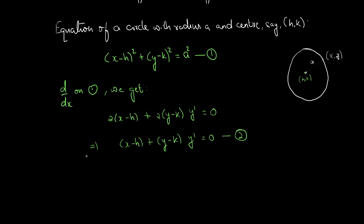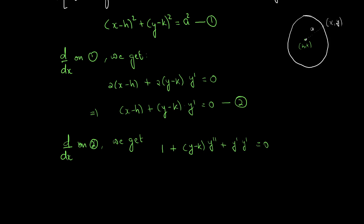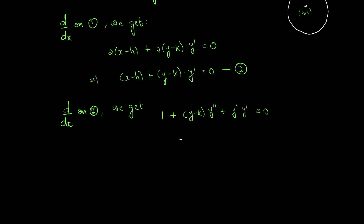Now differentiating equation 2 with respect to x again: the derivative of (x minus h) is 1, and for the product (y minus k) times y dash, we apply the product rule: (y minus k) times y double dash plus y dash times y dash, all equal to 0. From this, extracting y minus k, we get: y minus k equals minus (1 plus y dash square) divided by y double dash. Let this be equation 3.